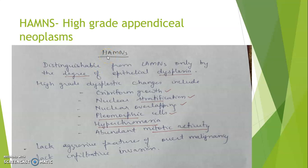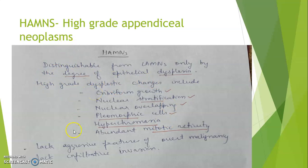High-grade appendiceal mucinous neoplasms (HAMNs) are distinguishable from low-grade neoplasms only by the degree of epithelial dysplasia. High-grade dysplastic changes include cribriform growth, nuclear stratification, nuclear overlapping, pleomorphic cells, hyperchromasia, and abundant mitotic activity. However, HAMNs lack the aggressive features of overt malignancy and lack the infiltrative invasion seen in adenocarcinoma.